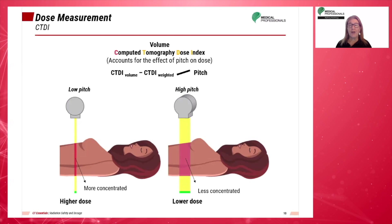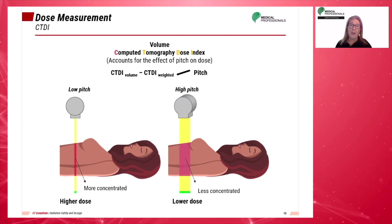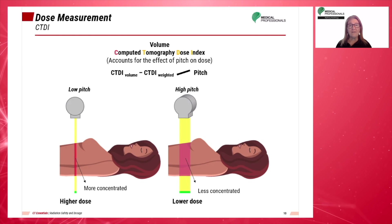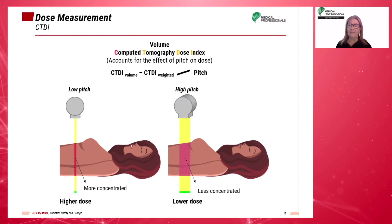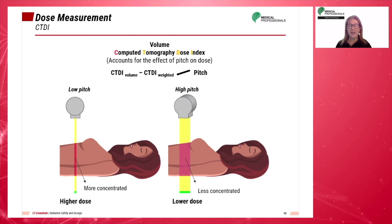Computed Tomography Dose Index, known as CTDI, is currently not used, but was the original equation used to calculate patient dose in CT. It was developed by the FDA and represents the mean absorbed dose in a scanned object, measured in grays.